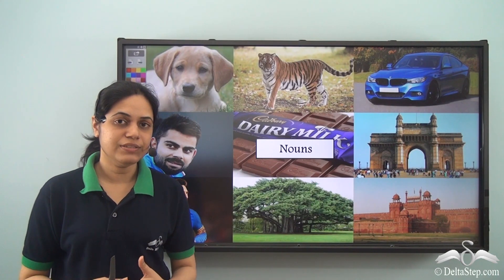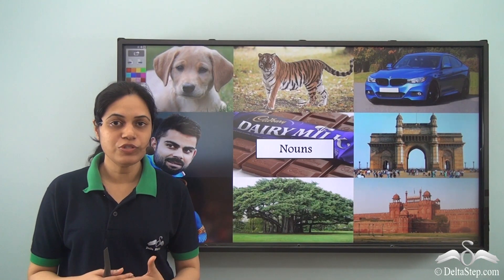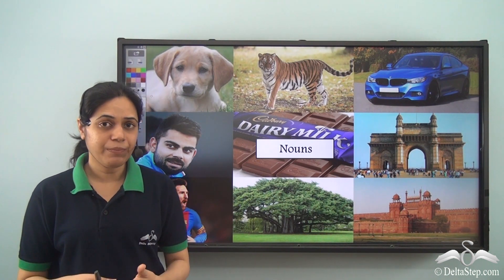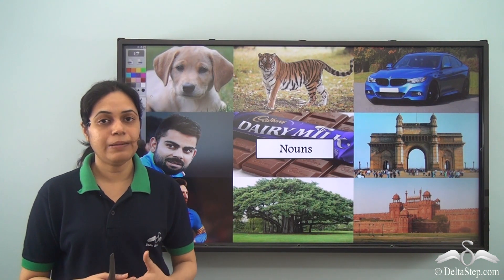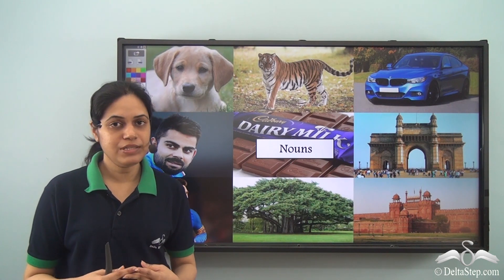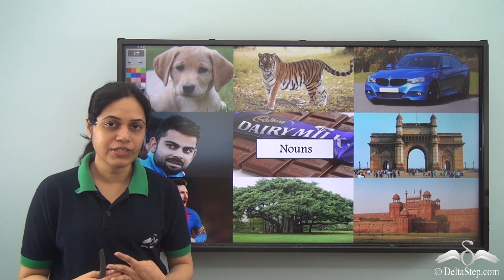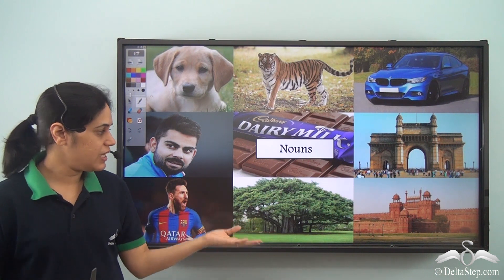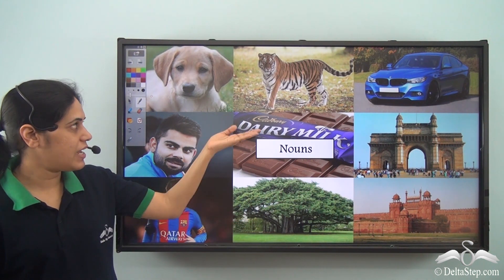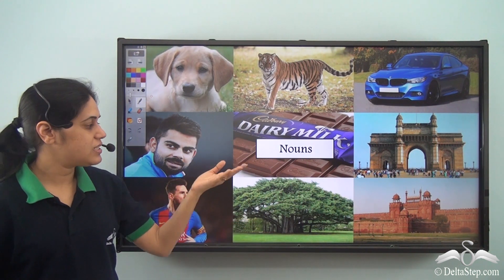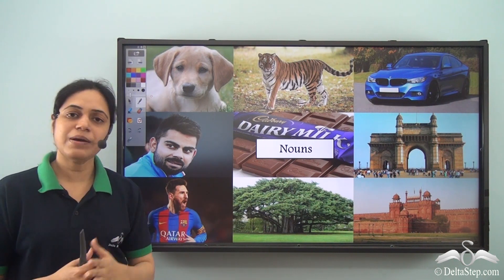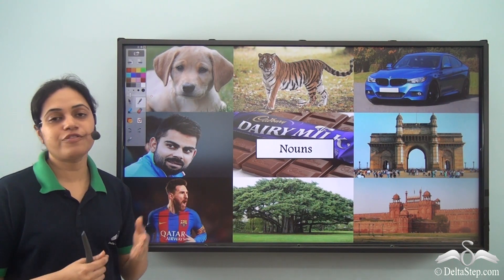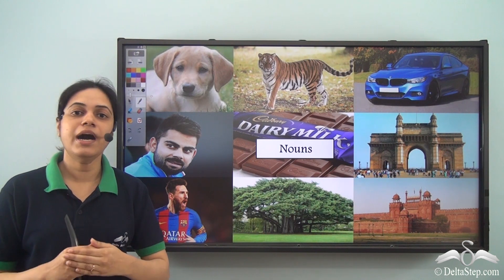We have already learned what are nouns. Nouns are naming words. What do they name? They name people, animals, places or things. So in this picture we see some people, some animals, some places or some things, and the names of each of them is called a noun.